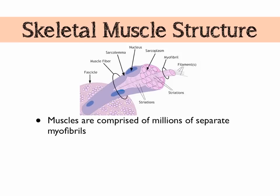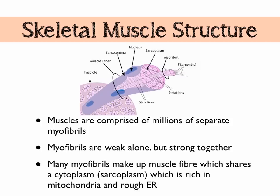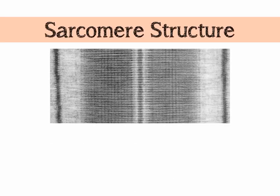Muscles are comprised of millions and millions of separate myofibrils. Those myofibrils make up larger muscle fibers, which go to make up the muscle as a whole. Myofibrils alone are pretty weak, but when you've got millions working together they can be pretty strong. Muscle fibers share a cytoplasm which we call the sarcoplasm, rich in mitochondria for generating ATP by aerobic respiration. The rough endoplasmic reticulum is called the sarcoplasmic reticulum, and the cell membrane of a muscle fiber is called the sarcolemma. In a minute we're going to look at the sarcomere.